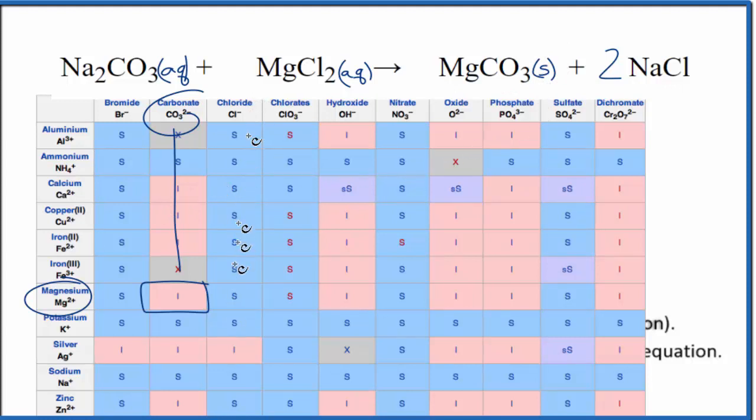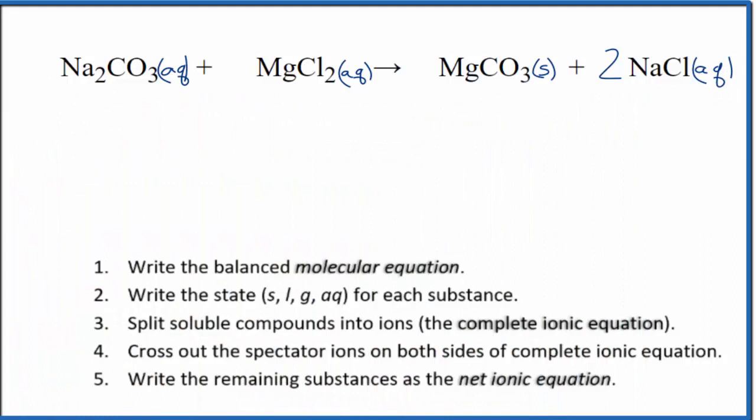And we said the chlorides, they're pretty much all soluble with the exception of silver, so this will be aqueous as well. That's dissolved in water. So we have the states of each one of the compounds in our net ionic equation for Na2CO3 plus MgCl2.